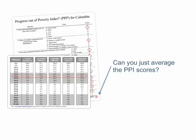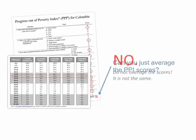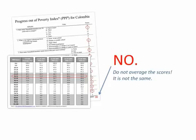Can you calculate the poverty rate of a group by averaging the group's PPI scores and converting that average score to a poverty likelihood value? No. You cannot calculate the poverty rate in a group by averaging the score. You must average the likelihood values or your result will be wrong.